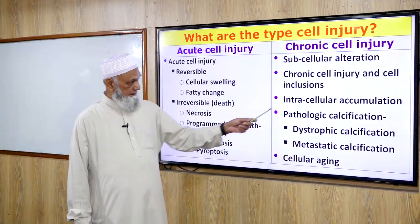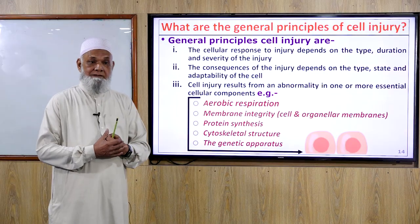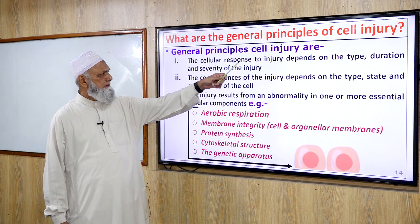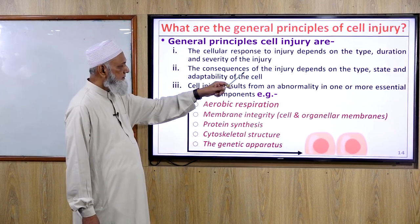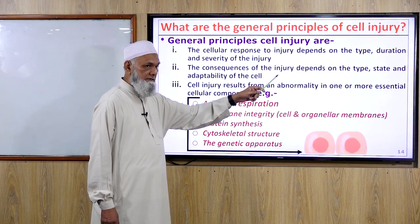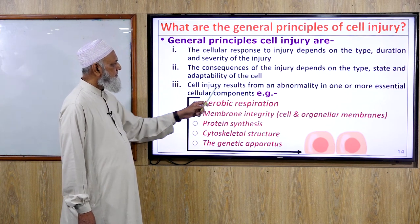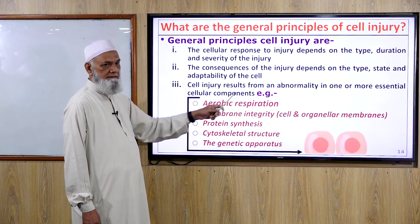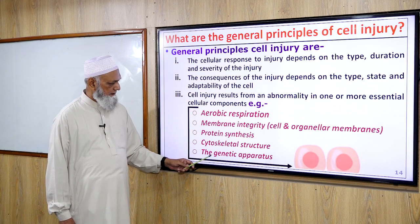Intracellular accumulation refers to accumulation of proteins, lipids, or fat. General principles of cell injury: the cellular response to injury depends on the type, duration, and severity of injury. The consequences depend on the type, state, and adaptive capability of the cell. Cell injury results from an abnormality in essential cellular components — aerobic respiration, membrane integrity, protein synthesis, cytoskeletal structure, or genetic apparatus.